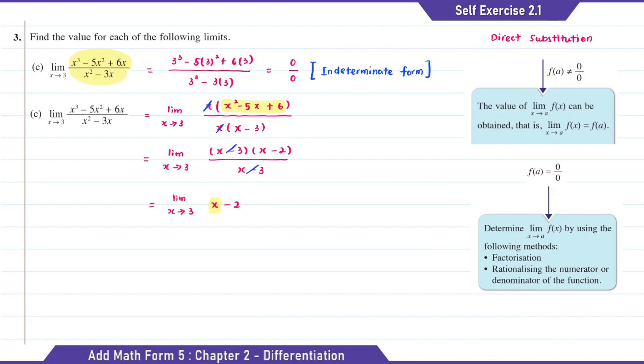Here we get (x minus 3)(x minus 2) over (x minus 3). So here we can cancel the x minus 3. So now when we substitute x with 3, we get 3 minus 2. Then the answer is 1.